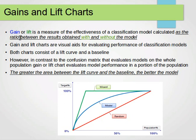They are calculated as the ratio between the results obtained with and without the model. For example, a company wants to send out advertisements and check the response rates of people contacted. This is used to measure the effectiveness of a classification model by using and not using the model for an advertisement campaign. In the next slide things will be much clearer.